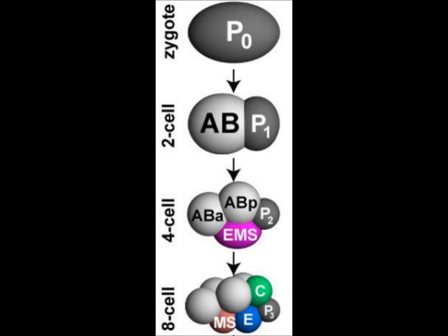If you look at the difference between the 4-cell and 8-cell stage, the EMS cell actually divides into 2 daughter cells called MS and E. If MS and E are allowed to develop by themselves autonomously, as if no cell-cell interaction can take place, both those cells will adopt an MS-like fate.